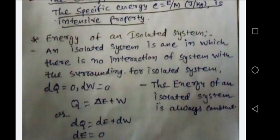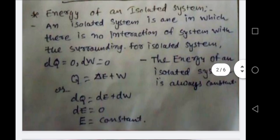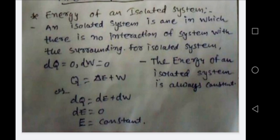Since dQ equals 0 and dW equals 0, we get dE equals 0. Integrating both sides, E equals a constant. So energy remains constant — the internal energy of an isolated system remains constant. This is one of the conclusions of this derivation: if we are considering any isolated system, we must consider that the internal energy of that system remains constant.